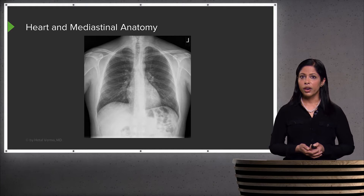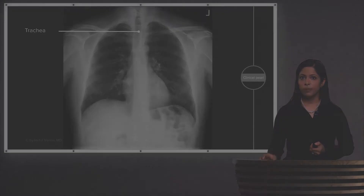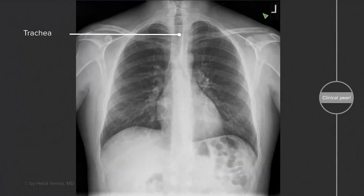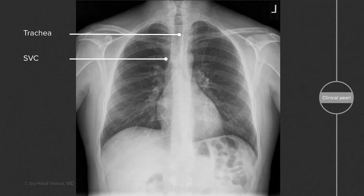So let's start first with heart and mediastinal anatomy. We take a look at the trachea, which again should be midline, and it's the air-filled structure within the mediastinum. We then take a look at the shadow of the SVC, or the superior vena cava, and that's seen just to the right of the mediastinum. You can see it pointed out here, and you can see the shadow coming down this way.